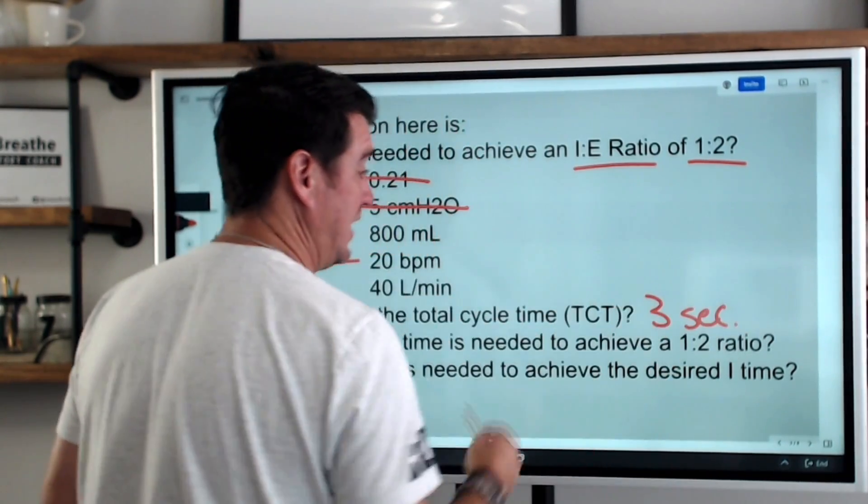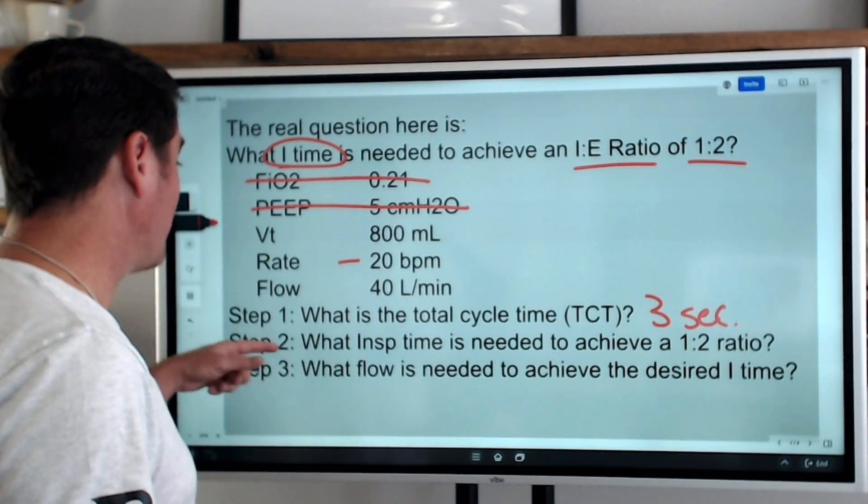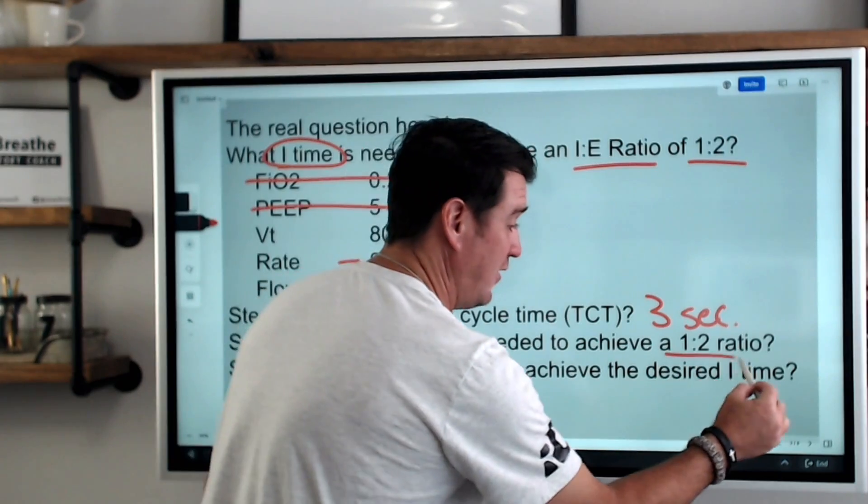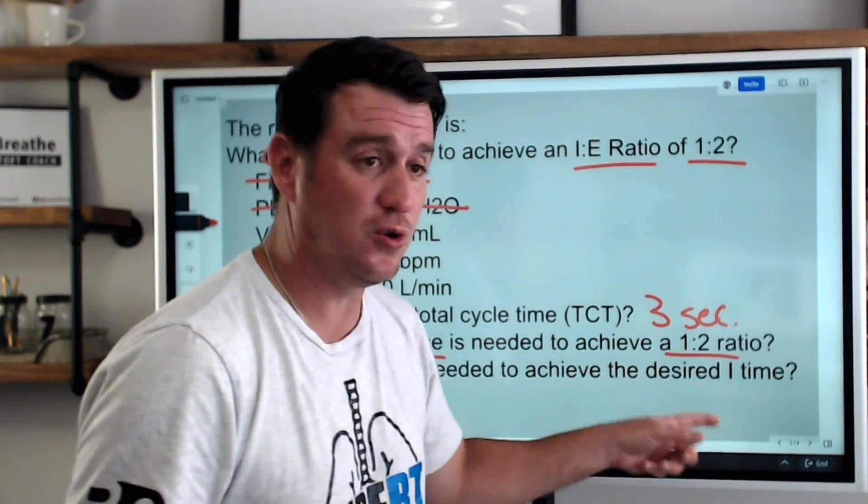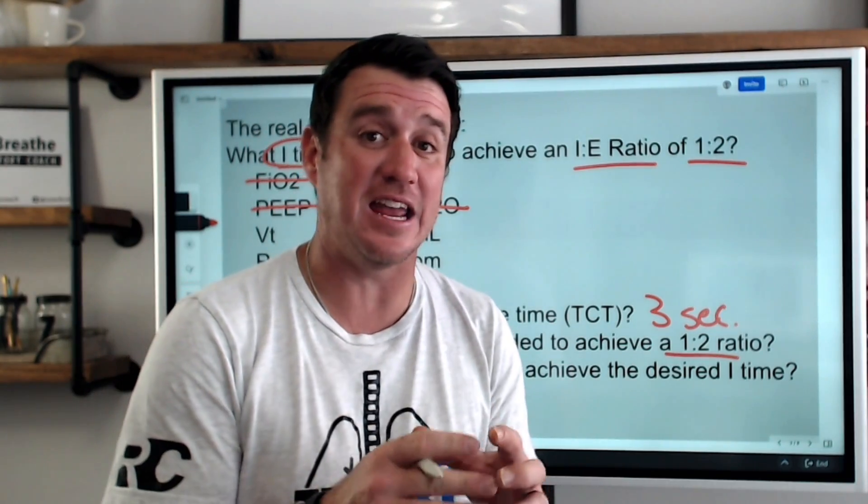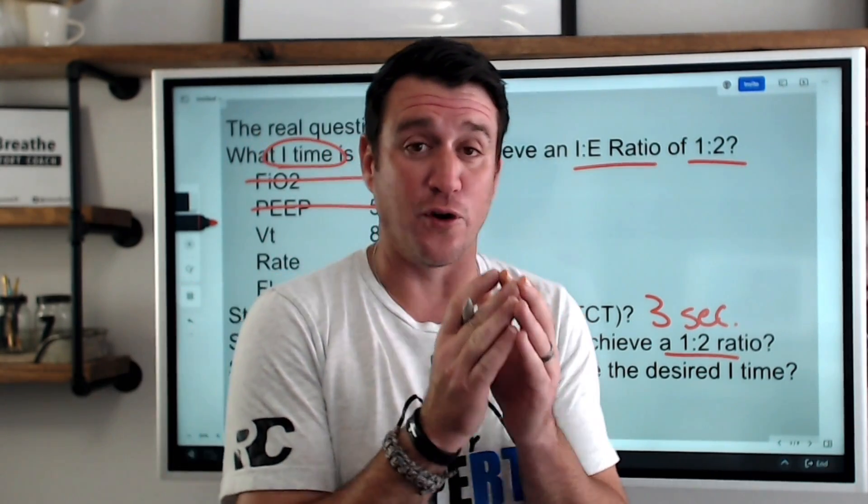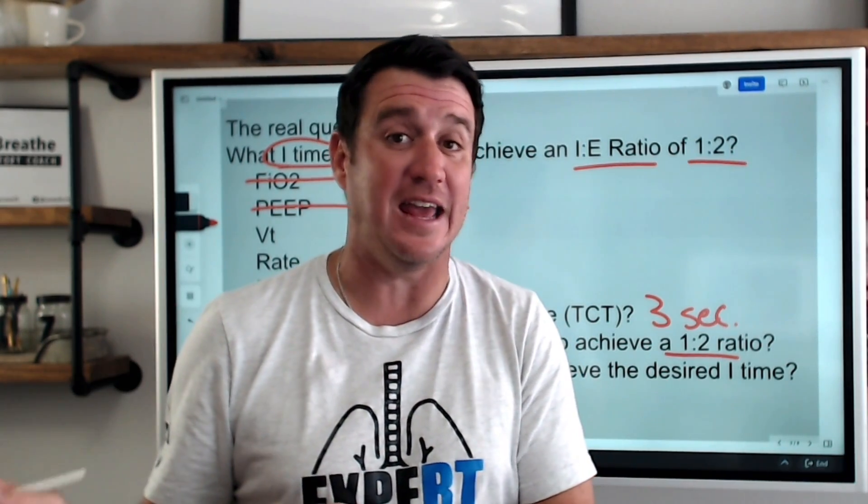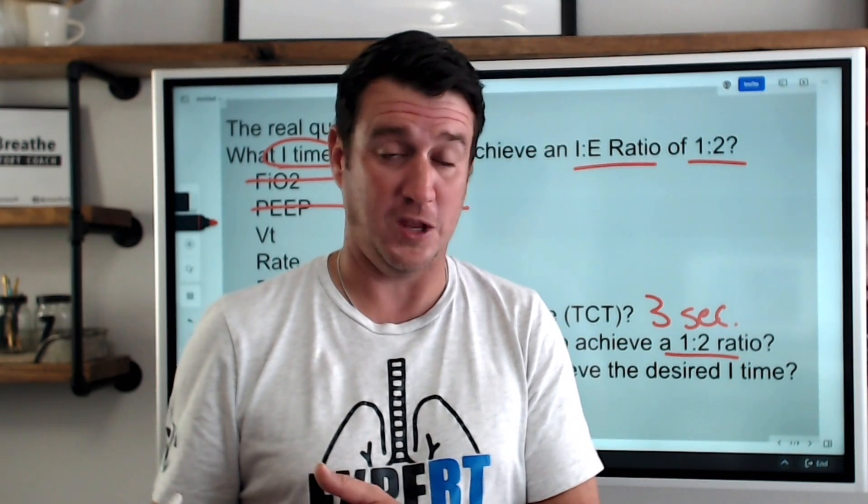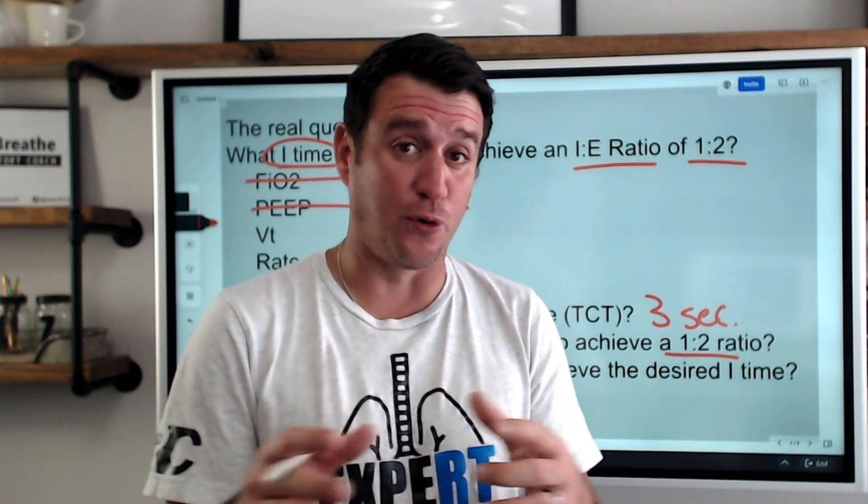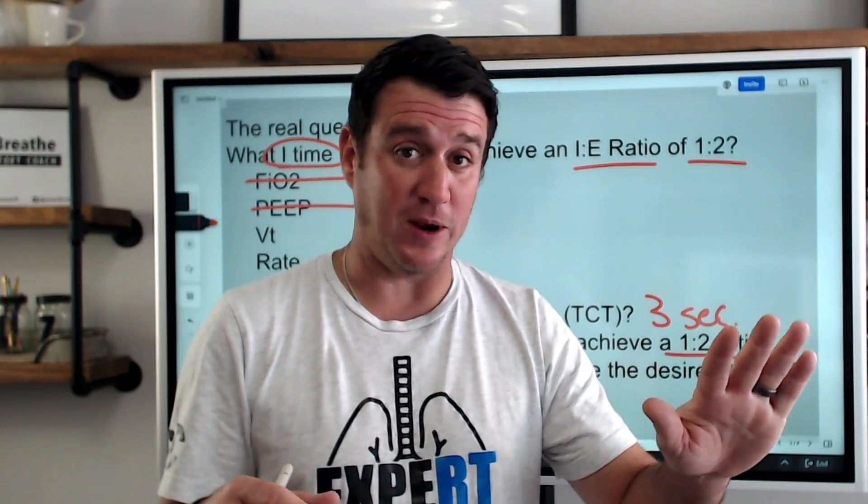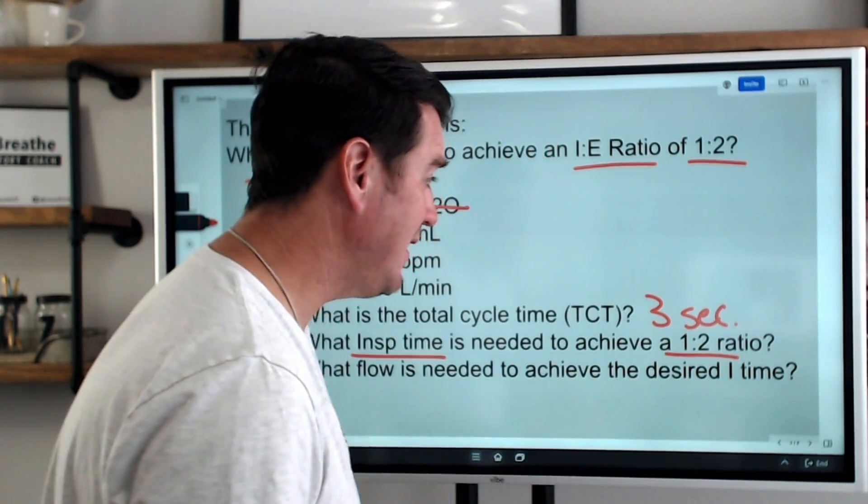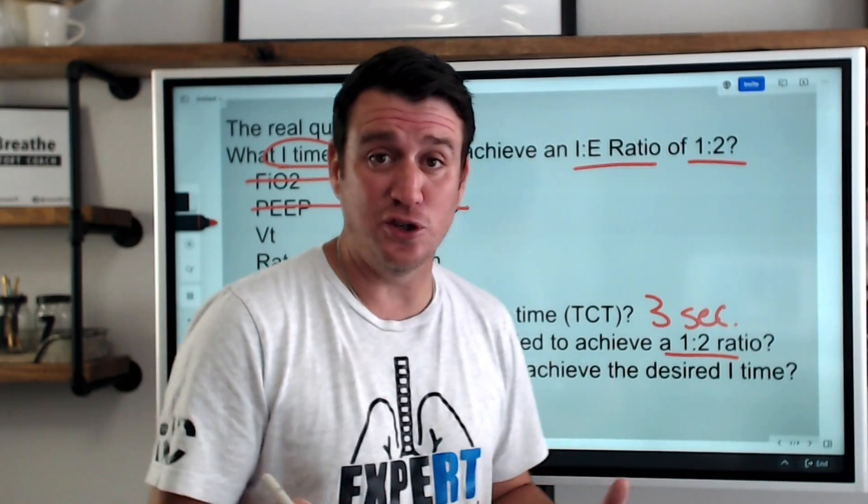Now this is going to be important because that is going to serve as the box that we're going to be operating in. So step two takes us down the road to say, okay, what inspiratory time is needed to achieve a one to two ratio. Now, when it says one to two ratio, you have to recognize what that's saying. That is saying, I want to spend for every one part I spend in inspiration, I want to spend twice as long in exhalation. Okay. So we're going to basically have three parts here. One part, inspiration. The other two parts are going to be exhalation.